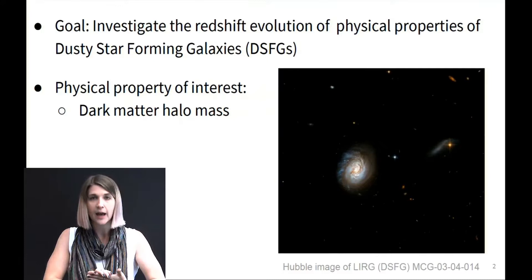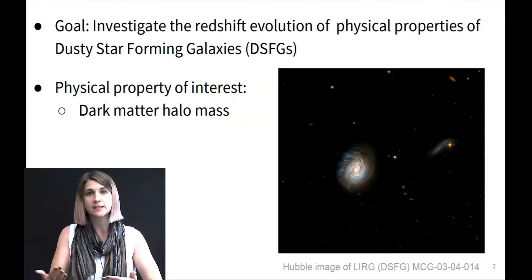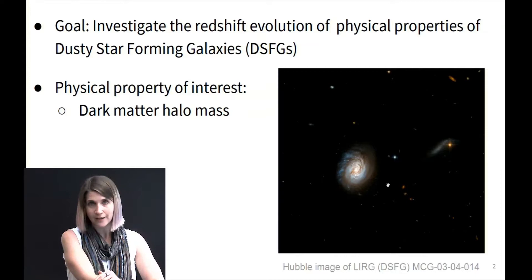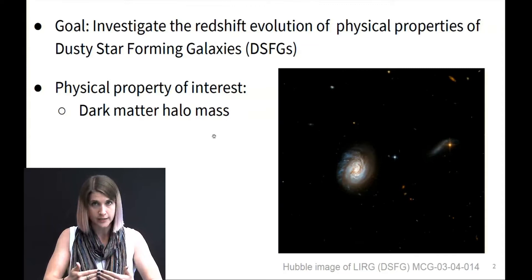These galaxies are objects in the universe that are highly star-forming and extremely dusty, which means we can study them at infrared wavelengths. This Hubble image shown here is an example of a dusty star-forming galaxy. The particular property of interest for us is the dark matter halo mass of these objects.